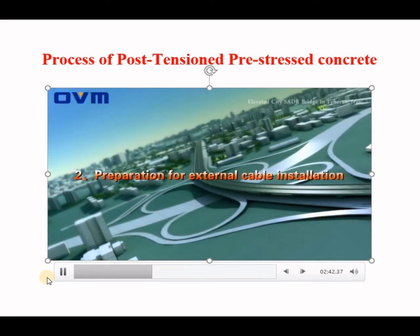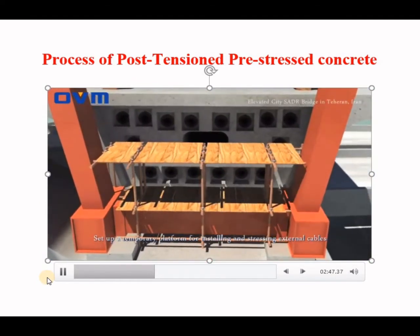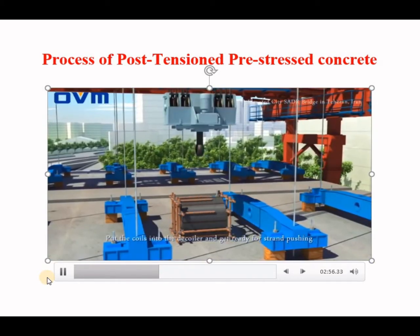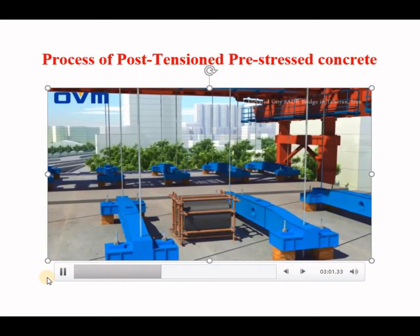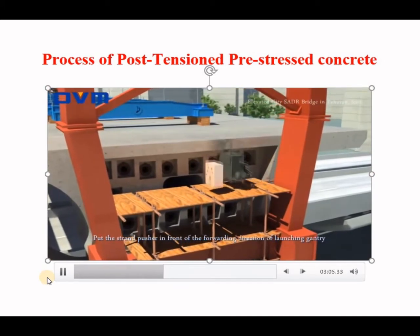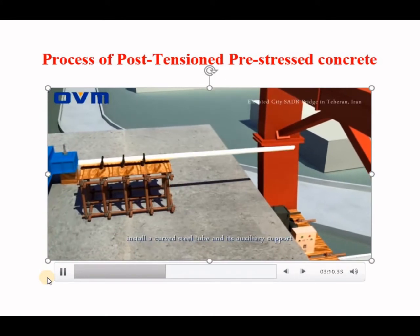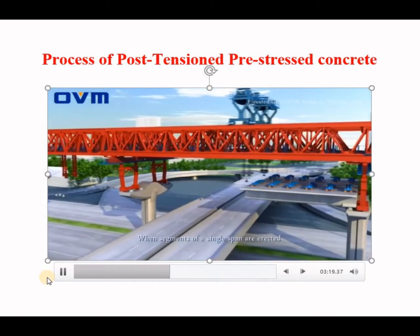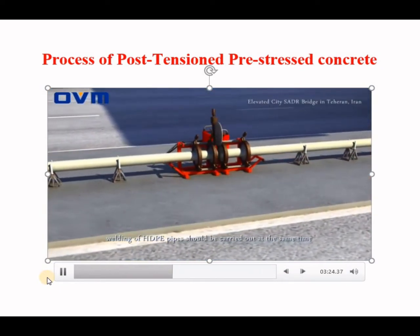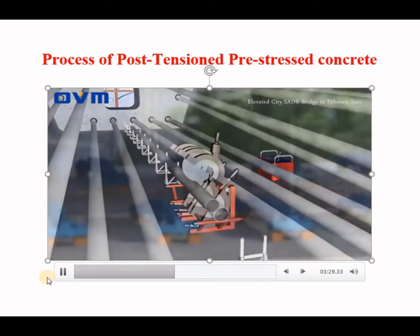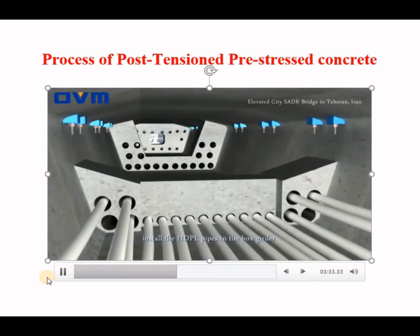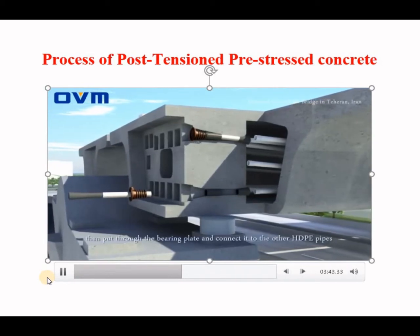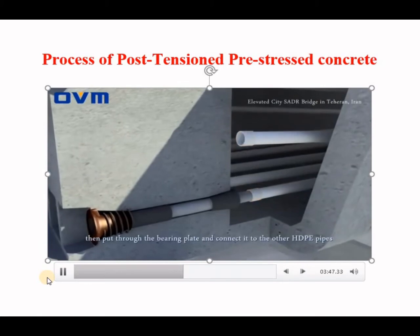For preparation of external cable installation: set up a temporary platform for installing and stressing external cables, lift coils of bare strands onto the deck by crane of the launching gantry, and put the coils into the decoiler ready for strand pushing. Put the strand pusher in front of the forwarding direction of the launching gantry and install a curved steel tube and its auxiliary support. When segments of a single span are erected, welding of HDPE pipes should be carried out at the same time. After assembly of all segments, install the HDPE pipes in the box girder, welded with HDPE liner and connected with HDPE couplers.